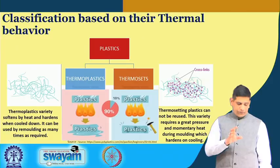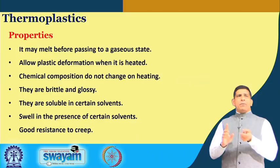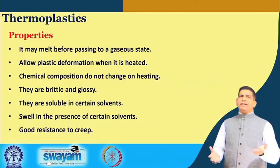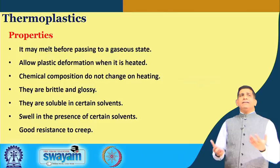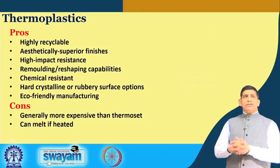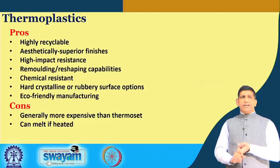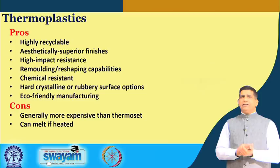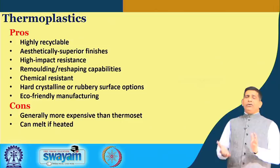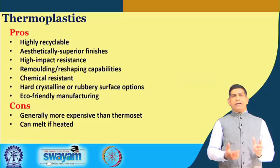Thermoplastic can melt before passing into a gaseous phase state, allowing plastic deformation when heated. The chemical composition does not change; they are brittle and glossy, soluble in certain solvents, they swell in the presence of certain solvents, and have good resistance to creep. Thermoplastics can be remolded to make different products. They are highly recyclable, can have a superior finish, high impact resistance, can be remolded and reshaped, are chemically resistant, and come in both hard crystalline and rubber surface options — you can play with the temperature to adjust the process.